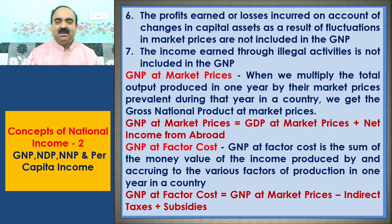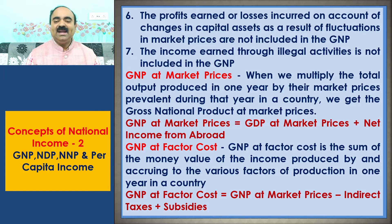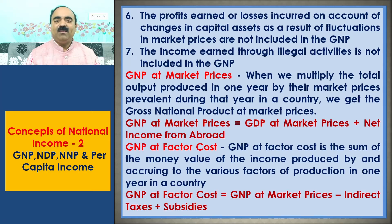The income earned through illegal activities is not included in the GNP. Let us also learn about GNP at market prices and GNP at factor costs. When we multiply the total output produced in one year by their market prices prevalent during that year in a country, we get the Gross National Product at market prices. Therefore, GNP at market prices is equal to GDP at market prices plus net income from abroad.